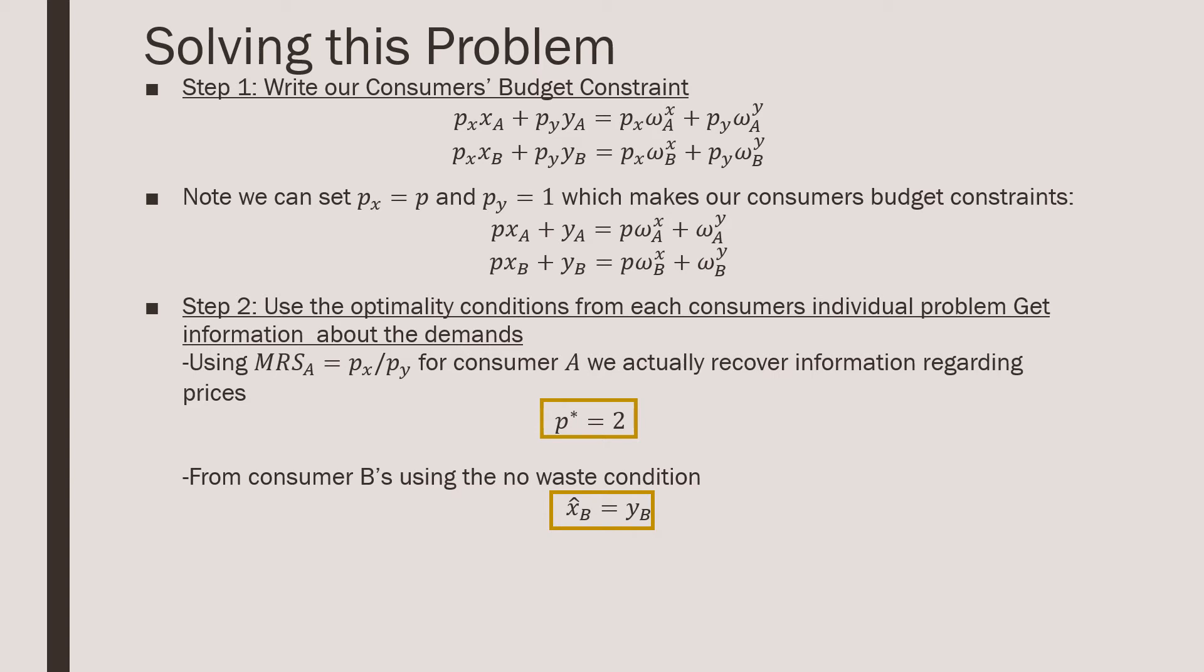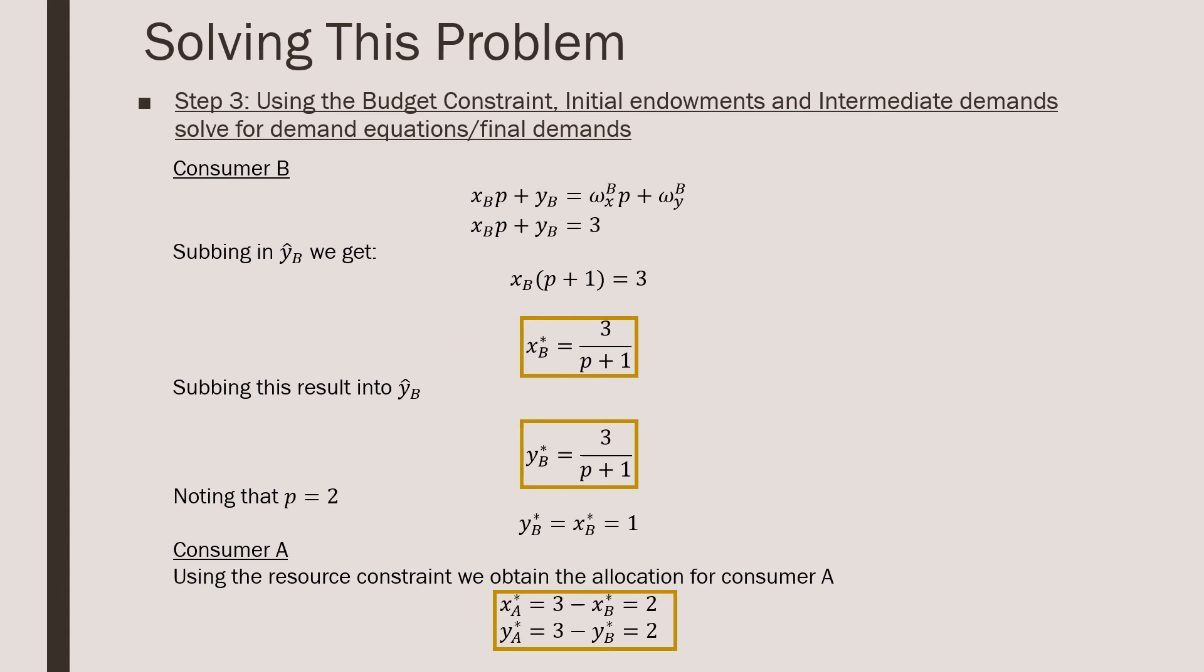So it's a little bit more of a roundabout way of finding out stuff for consumer B. We know our no waste condition from the structure of this Leontief preferences there.